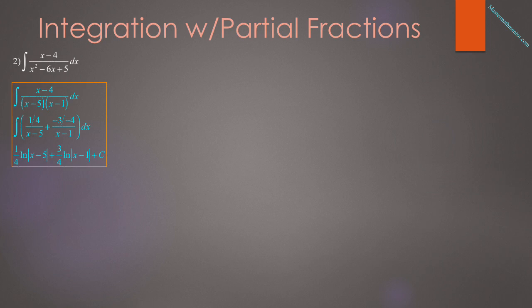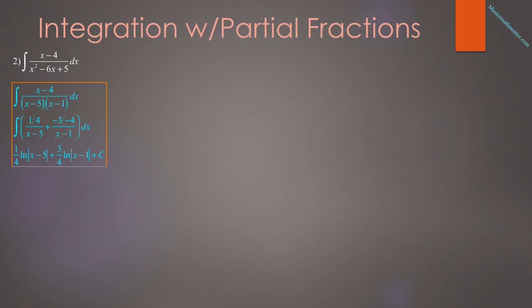Let's see how this technique is used in several problems. Number 2 asks for the integral of (x − 4) over (x² − 6x + 5) dx. Our first step is to factor the denominator into (x − 5)(x − 1). Using the Heaviside method: when x = 5, we get (5 − 4) over (5 − 1) = 1/4. When x = 1, we get (1 − 4) over (1 − 5) = 3/4. The result is (1/4) ln|x − 5| + (3/4) ln|x − 1| + C.